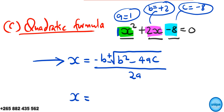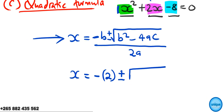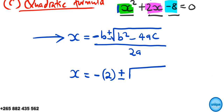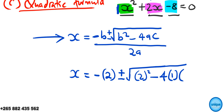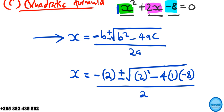For our equation x squared plus 2x minus 8 equals 0, we identify: a equals 1, b equals positive 2, and c equals negative 8. Substituting into the formula: x equals negative 2 plus or minus the square root of 2 squared minus 4 times 1 times negative 8, all divided by 2 times 1.